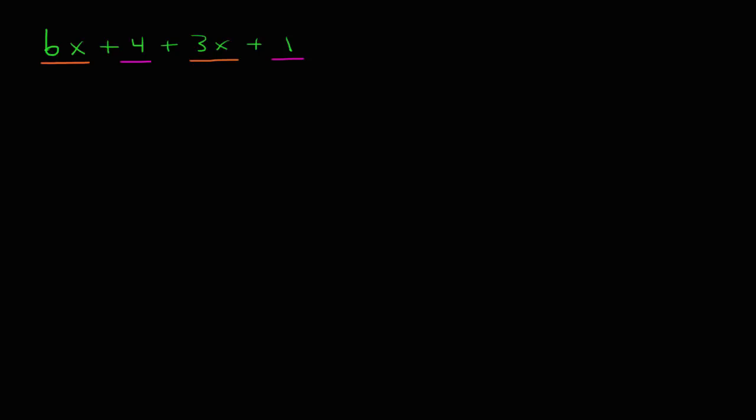So we can combine our like terms. 6x + 3x is 9x. 4 + 1 is 5. Notice we are done at this point because 9x and 5 are not like terms—we cannot combine them.